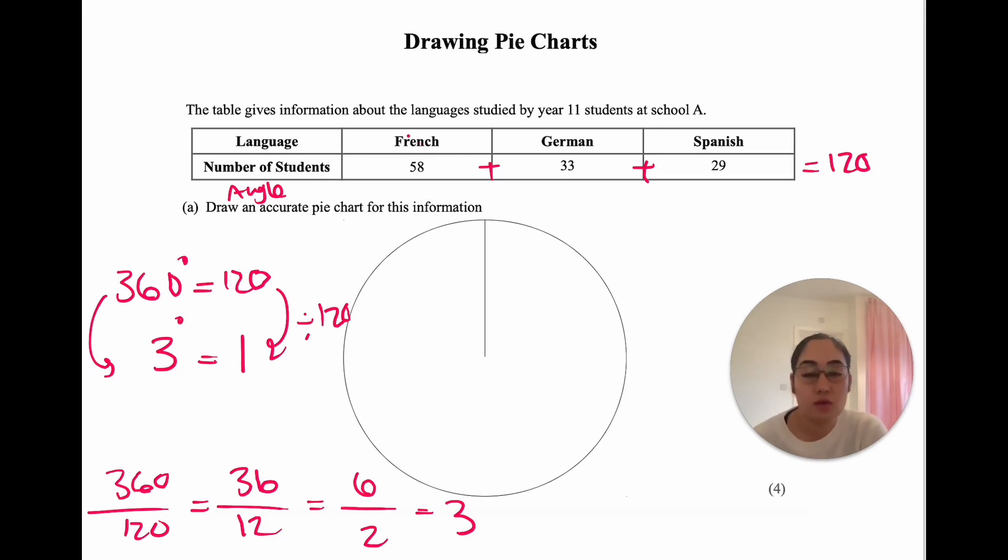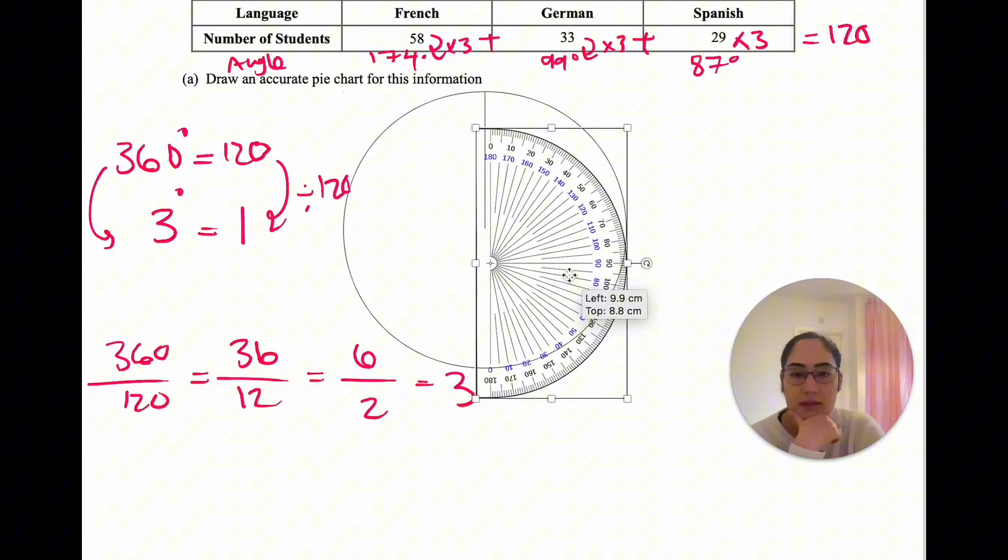If you want to know the angle for each category, we need to multiply each by 3. 58 multiplied by 3 equals 174. 33 multiplied by 3 equals 99 degrees. 29 multiplied by 3 equals 87 degrees. Once we know the degrees for each, we would grab our protractor.